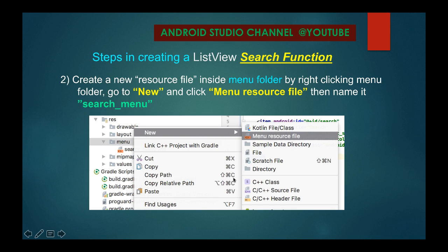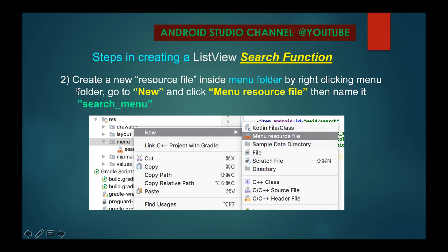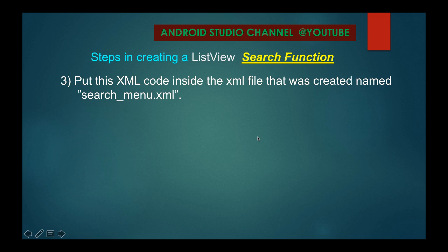After you have created the menu folder, step two is to create a new resource file. The resource file we are referring to is search_menu.xml. Create that resource file inside the menu folder by right-clicking the menu folder, clicking New, then clicking Menu Resource File, and naming it search_menu.